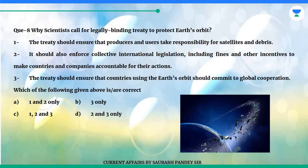Question 8: Why do scientists call for a legally binding treaty to protect Earth's orbit? 1. The treaty should ensure that producers and users take responsibility for satellites and debris. 2. It should also enforce collective international legislation, including fines and other incentives to make countries and companies accountable for their actions. 3. The treaty should ensure that countries using the Earth's orbit commit to global cooperation.